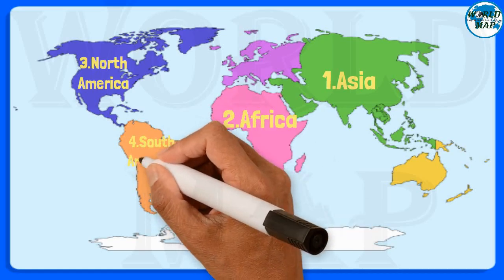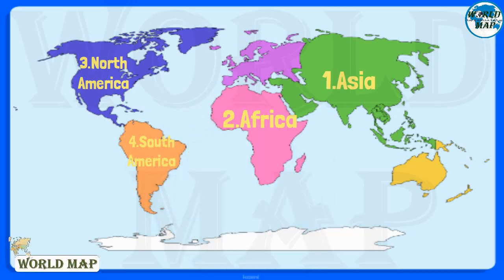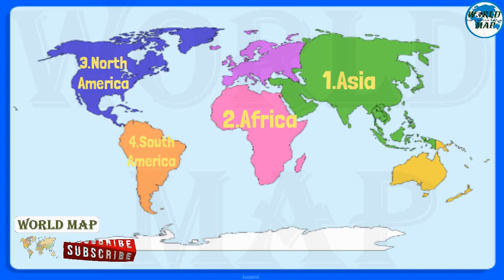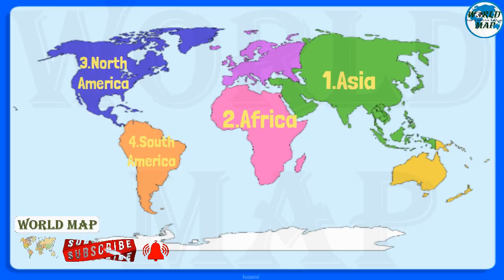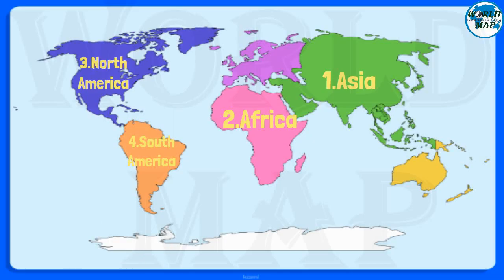Number 4: South America. It is the fourth largest continent area-wise and the fifth most populous in the world. It consists of 12 nations and mostly lies in the Southern Hemisphere, while a small portion of the continent lies in the Western Hemisphere.